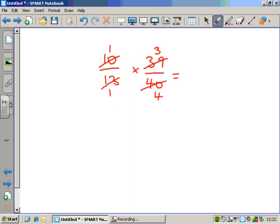Any more cancelling possible? No. Okay, so we do 1 times 3 on the top gives us 3. And 2 times 11 on the bottom gives us 22. And we get a final answer of 3 over 22, which can't be simplified.